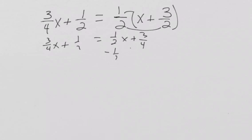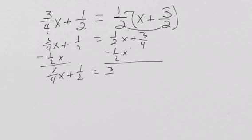Then, I want to subtract one-half x from both sides. Now you may be saying to yourself, how do you do three-fourths x minus one-half x? It's just three-fourths minus one-half, or three-fourths minus two-fourths, and we get one-fourth x plus one-half equals three-fourths.